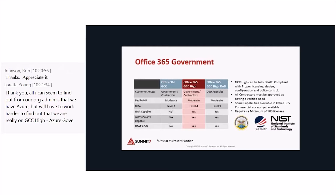Then we have to look at the government cloud — Office 365 GCC High. Office 365 GCC High is today certified to FedRAMP Moderate and is in the process of being certified to FedRAMP High. They don't have that certification yet, but they're in the process of getting there.